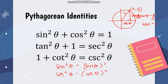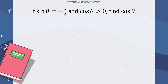Now we'll use these identities to find trigonometric function values. Example: sine theta equals negative three-fourths and cosine theta is greater than zero — find cosine theta. To solve this, identify which identity includes both sine and cosine. We can use the Pythagorean identity: sine squared theta plus cosine squared theta equals one, since it includes both functions. Substitute the given sine value.